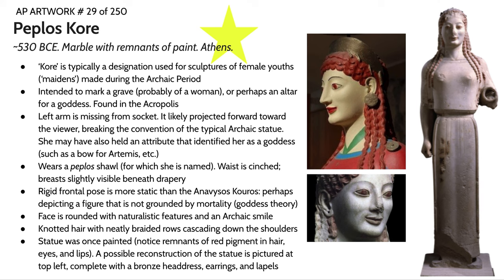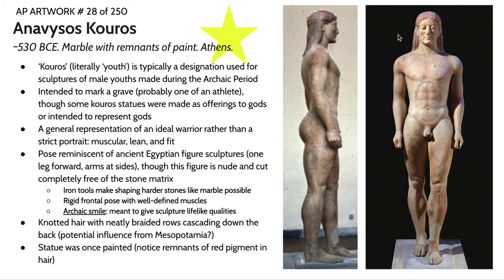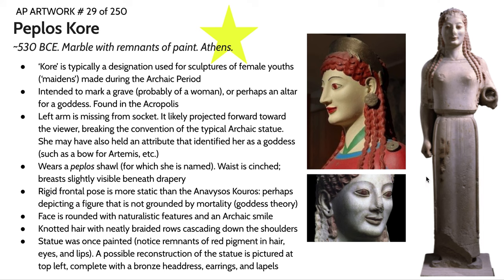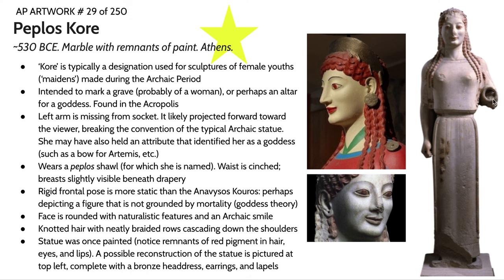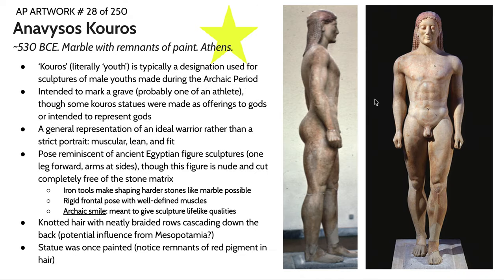The counterpart to the Kouros is the Korae. Korae is a designation used for sculptures of female youths or maidens made during the Archaic period. You're seeing a lot of similarities to the Kouros — the archaic smile and a relatively rigid frontal pose not using a ton of negative space. A couple of differences though: the Korae is clothed, she has this peplos shawl — that's how she received her name — and she doesn't really have a walking pose, her legs are right next to each other. It is very likely that she had an arm projecting forward probably holding something that indicated she was a goddess of some sort, though we're not entirely sure.